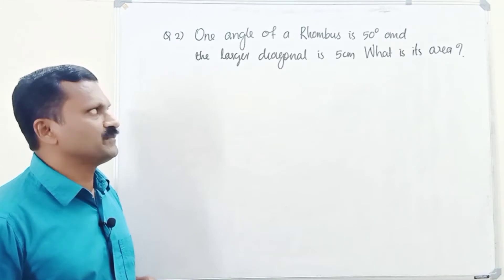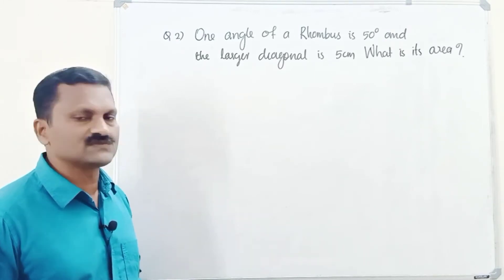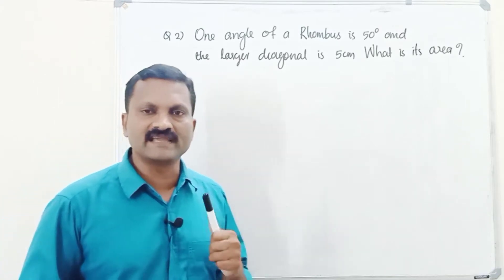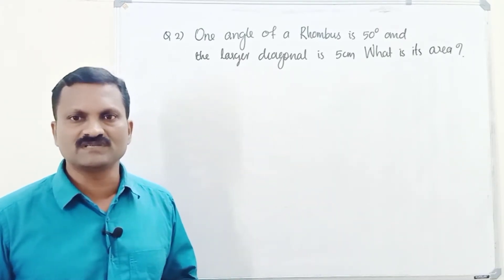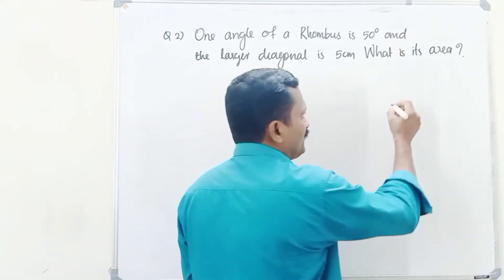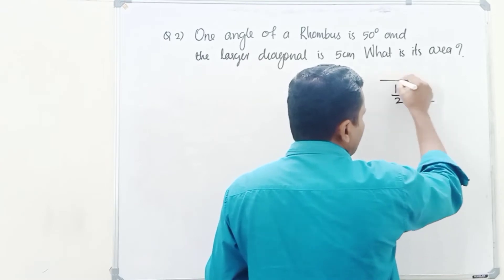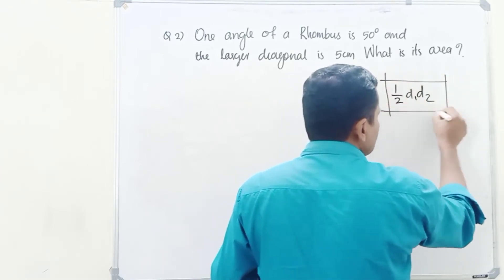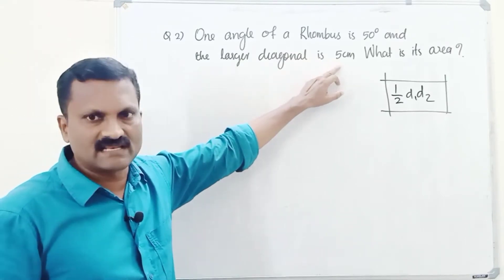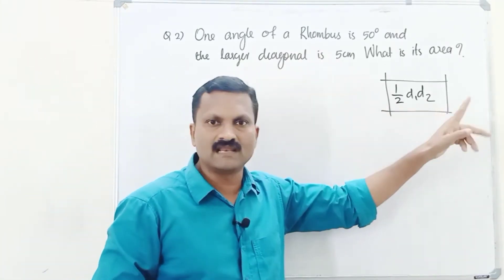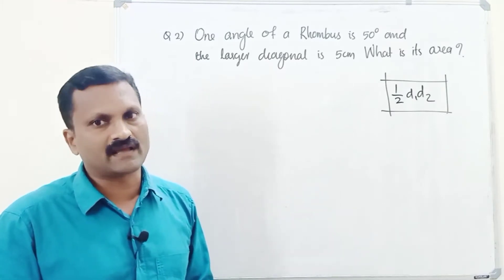Next question: one angle of a rhombus is 50 degrees and the larger diagonal is 5 centimetres. What is its area? We have to find the area of the rhombus. The area of a rhombus, if diagonals are D1 and D2, is half D1 into D2. One diagonal is 5 centimetres. We have to find the length of the second diagonal. We can apply trigonometric ratios.